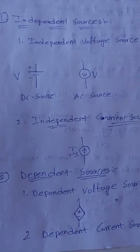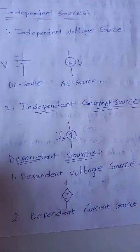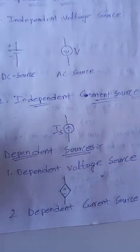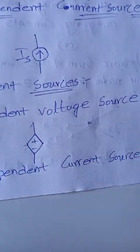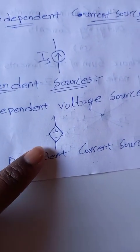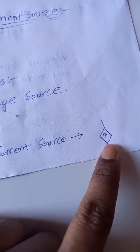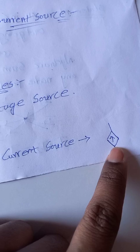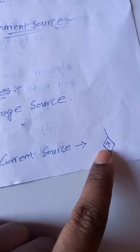The dependent source uses a diamond shape symbol. For voltage source, we represent positive and negative terminals. For current source, we indicate an arrow mark. The arrow mark indicates the flow of current direction.